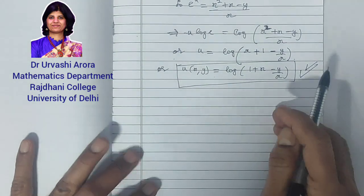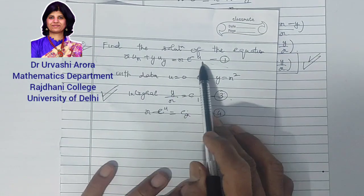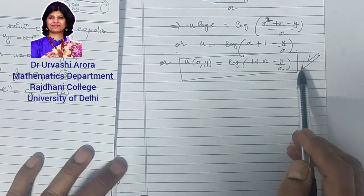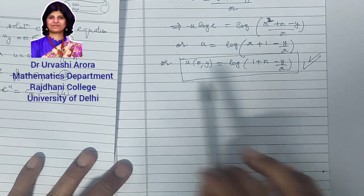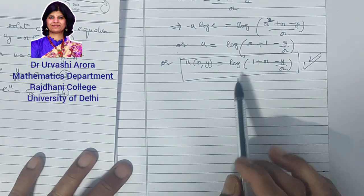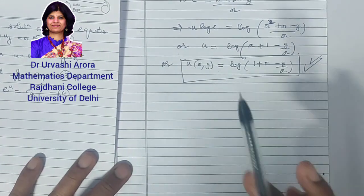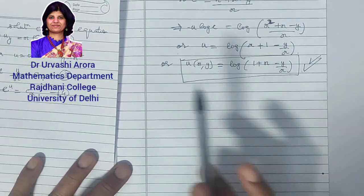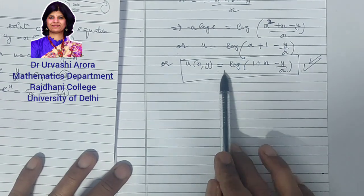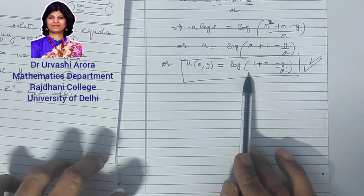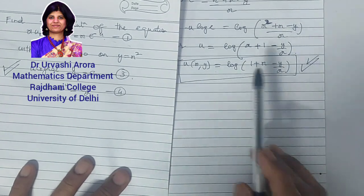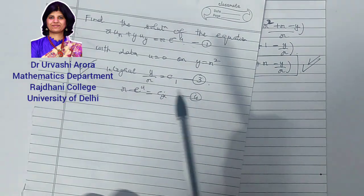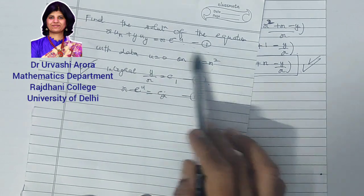This is the solution of the Cauchy problem — a quasi-linear first order PDE subject to the initial curve y = x² and initial data u = 0. This Cauchy solution is unique. Whatever combination of ratios you consider in the characteristic equations, the Cauchy solution will always come out to be u = log(1 + x − y/x). Cauchy solution for a given Cauchy problem is unique. That was all about solving the Cauchy problem for a first order quasi-linear PDE when the initial condition is given in Cartesian form.